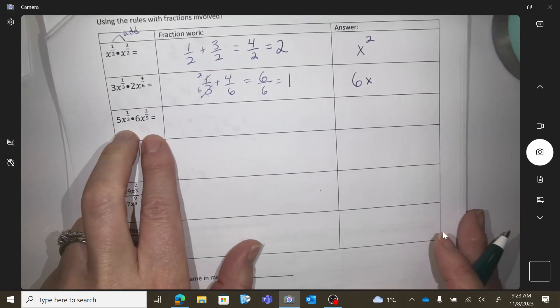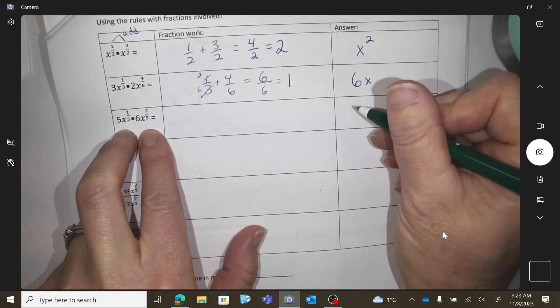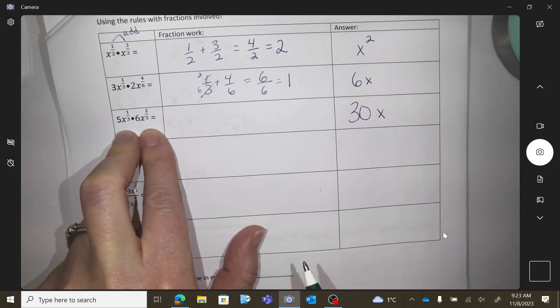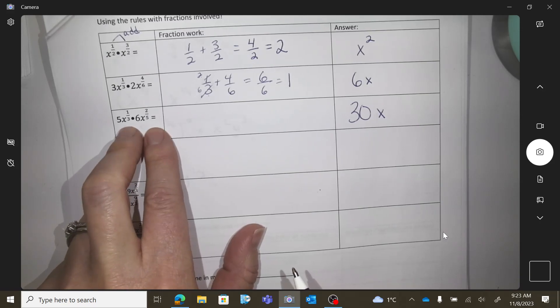Okay, let's try the next one. It's the same thing. There's coefficients, so do the math. 30. 30x is the base. So the rule says I'm going to have to add the exponents.